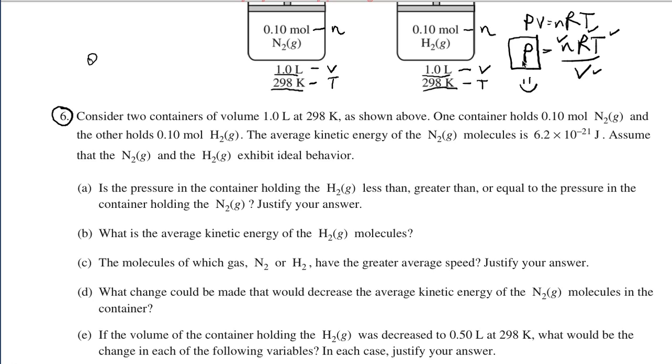Now the only thing they differ by is the fact that this one is nitrogen and this one is hydrogen. Nitrogen has a molar mass of 28 grams per mole, and the diatomic molecule, or Twinkie, hydrogen is 2 grams per mole.